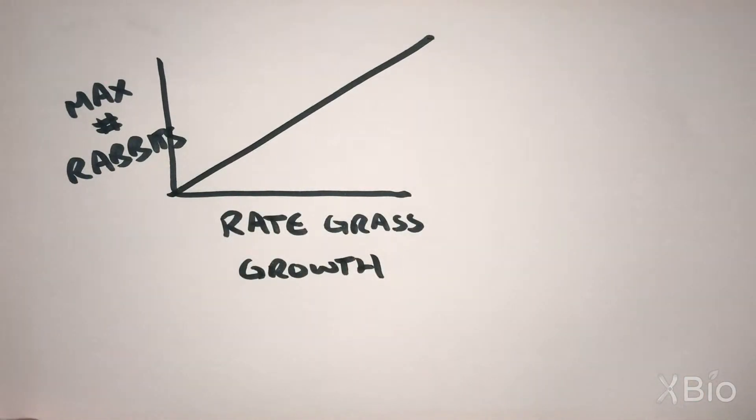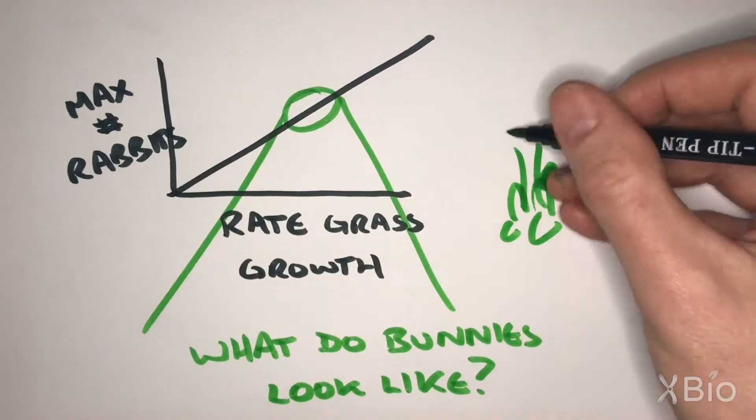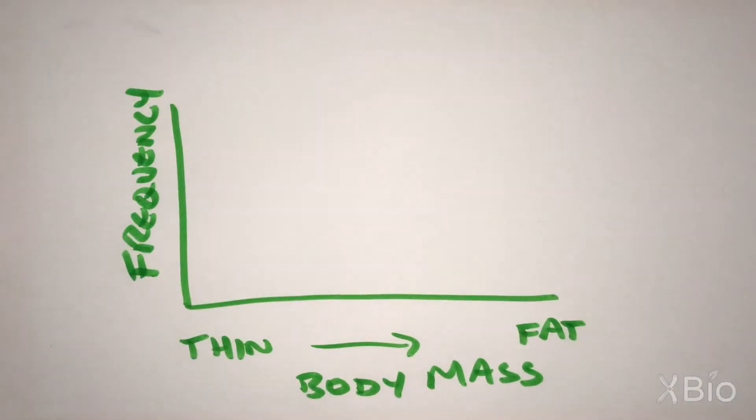Now we are curious about how rabbit body mass varies with limited food. For this, we can use a histogram. The y-axis of a histogram is frequency, and here, the x-axis is the body mass of rabbits.